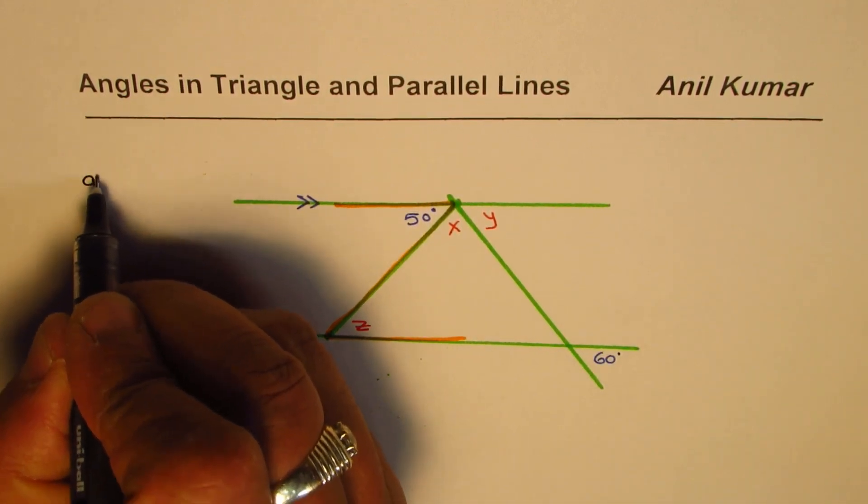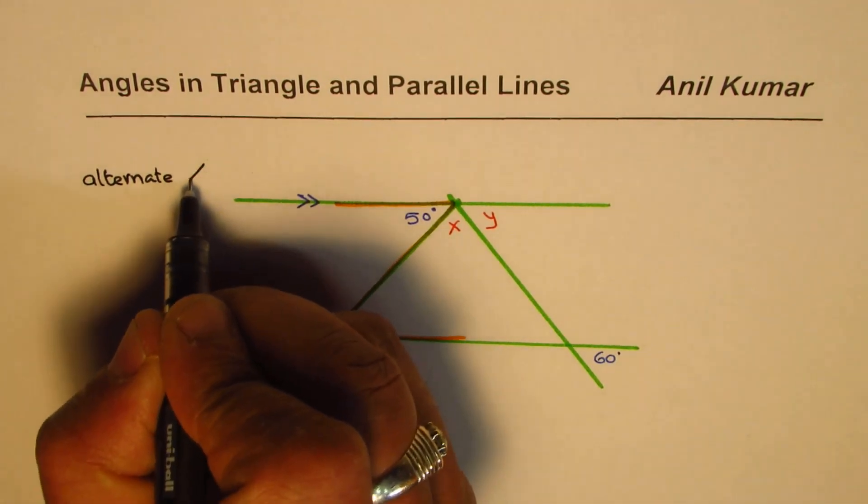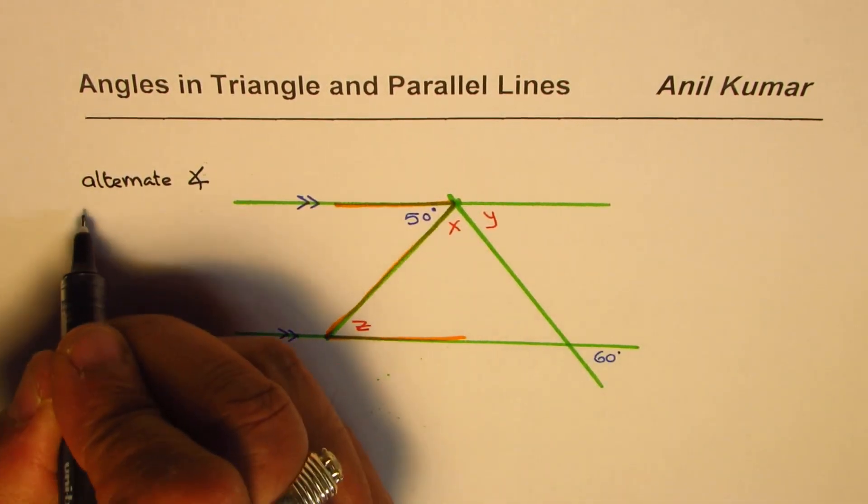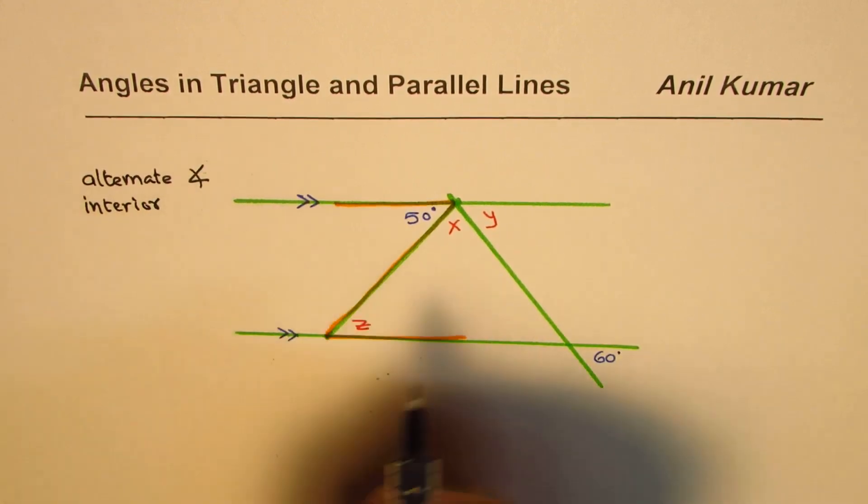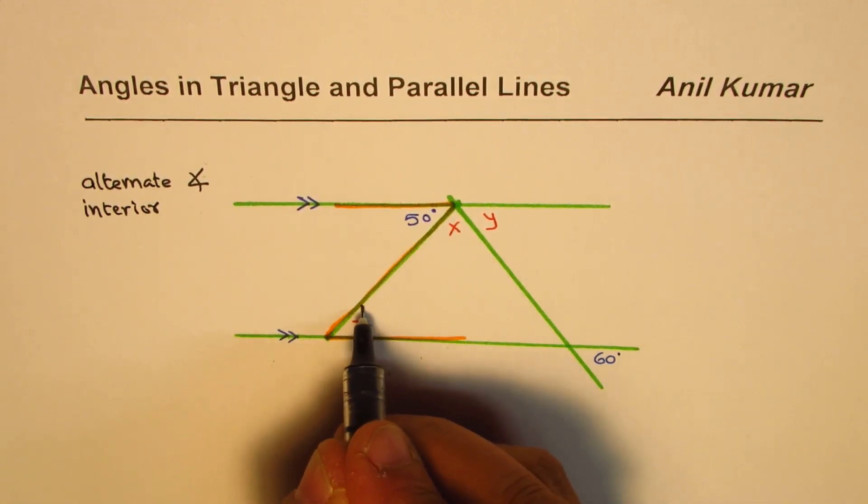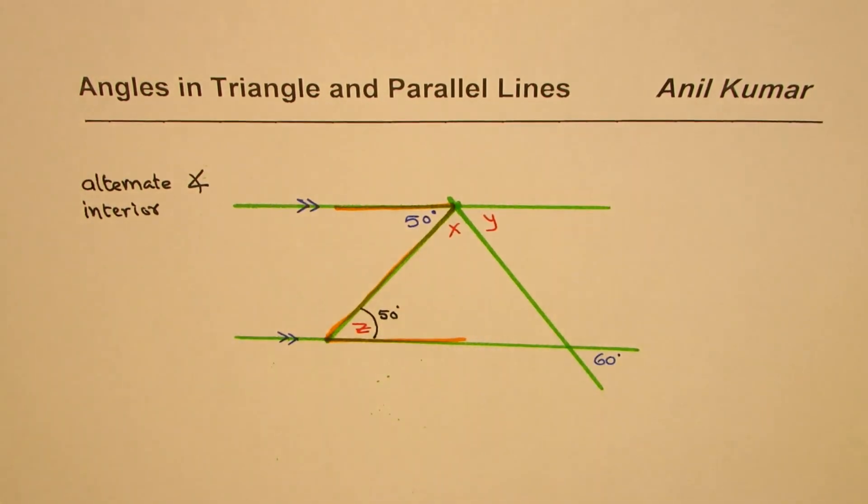So z pattern gives you interior alternate angles. So what we get here is alternate angles. And these ones are interior alternate angles, right? They are always equal. Therefore, z, this angle should be equal to 50 degrees. That becomes 50 degrees.